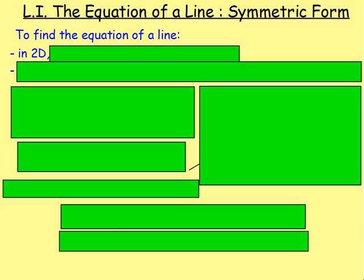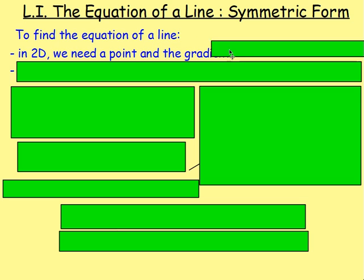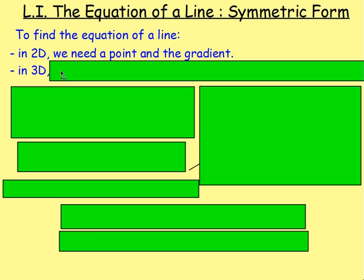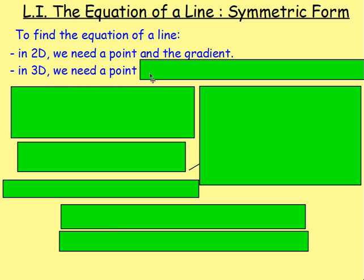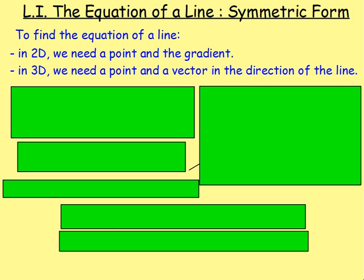The equation of a line — well, we know in 2D to get the equation of a line we need to know a point on the line and we also need to know the gradient of the line. If we mix that up and change that to 3D, what do we need? Well, we still need to know a random point on the line, but instead of the gradient, we need to know a vector that is in the direction of the line.